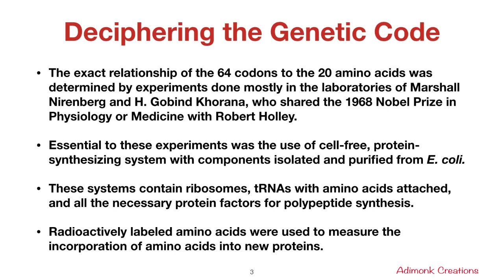Essential to this experiment was the use of a cell-free protein synthesizing system with components isolated and purified from E. coli. These systems contain ribosomes, tRNA with amino acids attached, and all the necessary protein factors for polypeptide synthesis. Radioactively labeled amino acids were also used to measure the incorporation of amino acids into new proteins. This is how Nirenberg and Khorana helped find the relationship of the 64 codons to the amino acids.